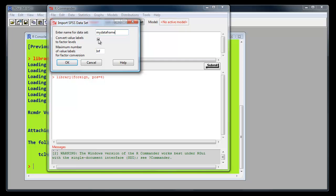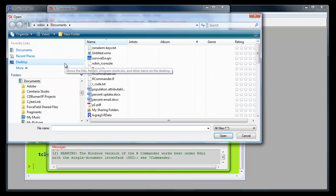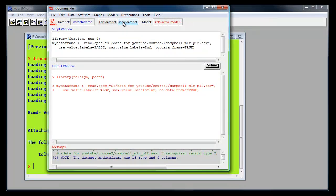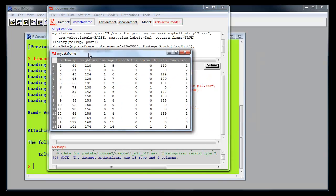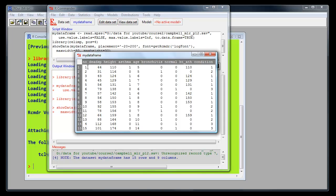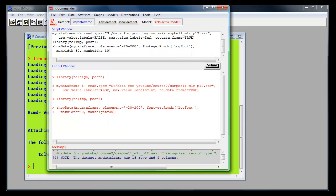We don't want to convert value labels to factor levels. Select the file we need. Check to see we've got the data in using the view data set option at the top. Here we are: subject number first column, second column dead space, height, asthma, age, bronchitis, exactly the same as in SPSS. Close that window.